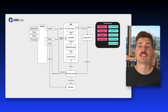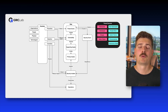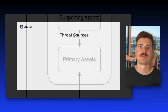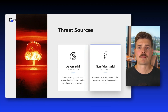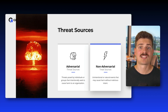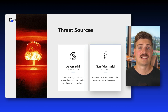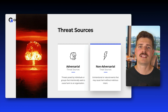Risks don't just appear out of thin air — they originate from threat sources, which can be either adversarial or non-adversarial. Adversarial threats involve someone actively trying to cause harm, such as hackers, cyber criminals, insider threats, or even nation-state actors. They use tactics, techniques, and procedures, often referred to as TTPs, to breach security and exploit vulnerabilities.